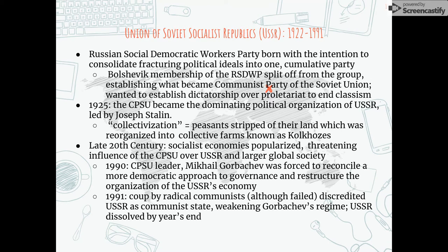Post-Russian Revolution, the Russian Social Democratic Workers' Party was created. The Bolsheviks eventually splintered from the group, establishing what would become the Communist Party of the Soviet Union. The CPSU wanted to establish an economy in which the proletariat was controlled by the government in order to prevent classism. By 1925, the CPSU became the dominating political party of the USSR. Under Joseph Stalin, collectivization stripped peasants of their land and reorganized the area into farms called kolkhozes.